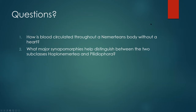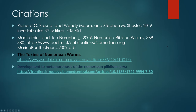Now I have a couple of review questions to make sure you've been paying attention. First: how does blood circulate through nemerteans if they don't have a heart? Second: what major synapomorphies help distinguish between the two subclasses, the Hoplonemertea and the Pilidiophora? Here are my citations. Thank you all for watching, and have a good day.